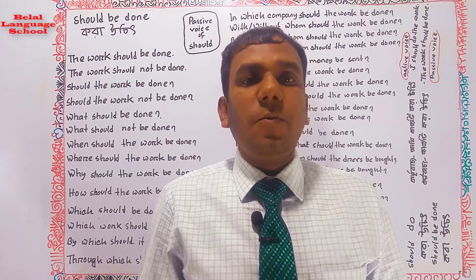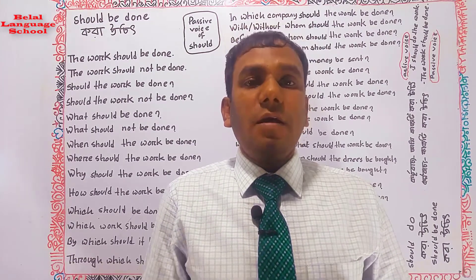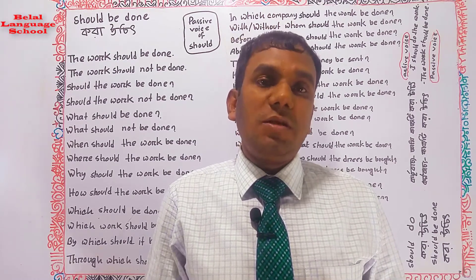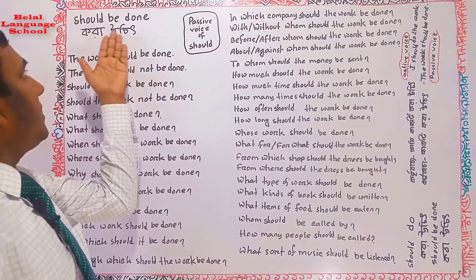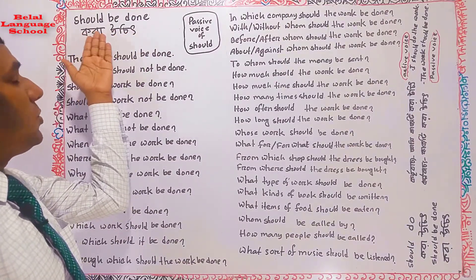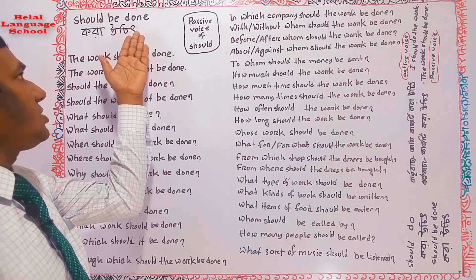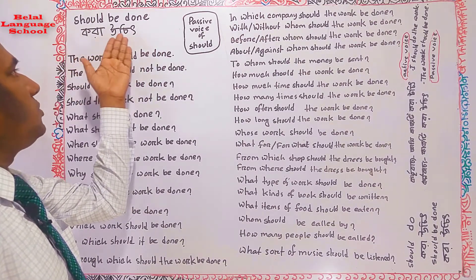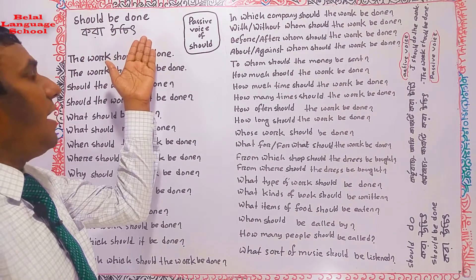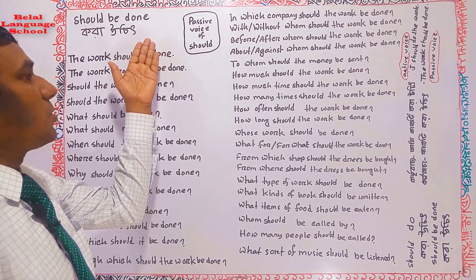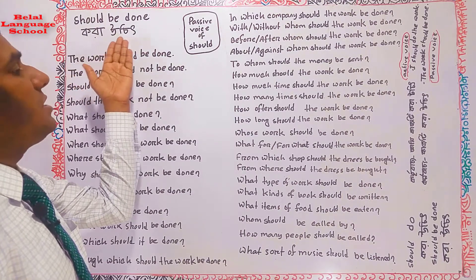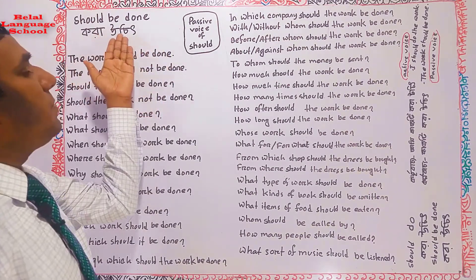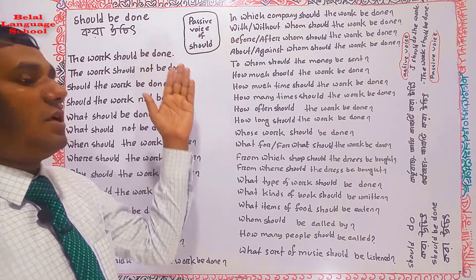Good evening, hello viewers, welcome back to my channel Beller Language School. In this evening I'll talk about basic passive voice — 'should be done' — kora uchit. So here it is written: 'should be done.' The structure is: should + be + verb past participle form. The meaning 'kora uchit' applies in both active and passive voice in Bangla, and with 'should be done' we'll form example sentences.